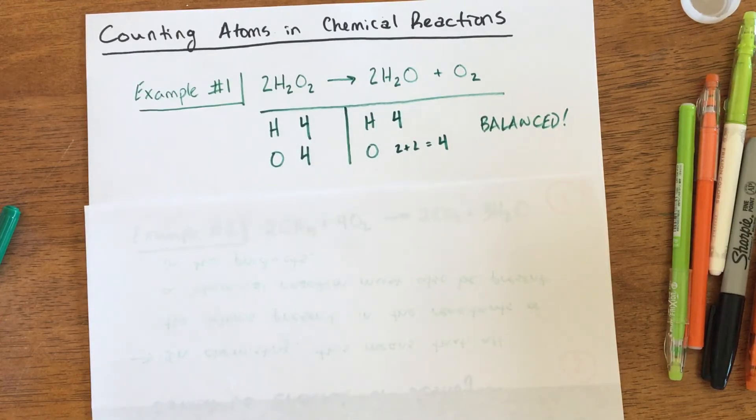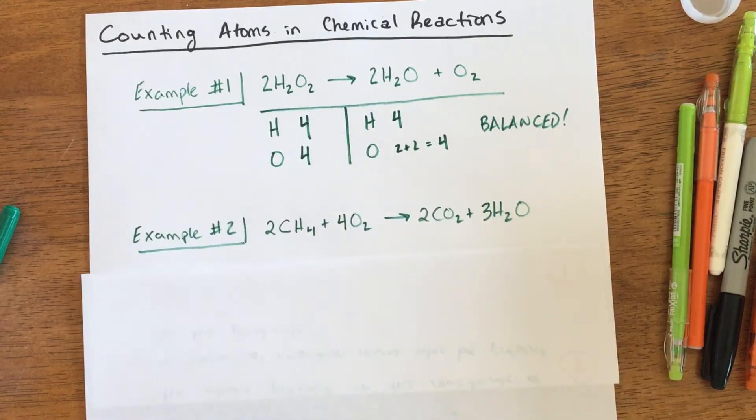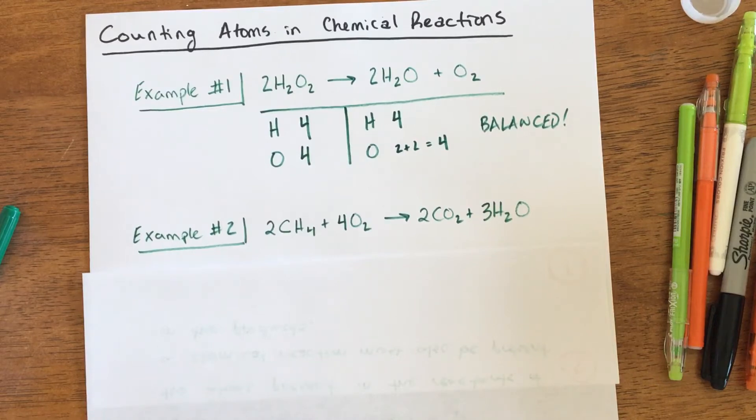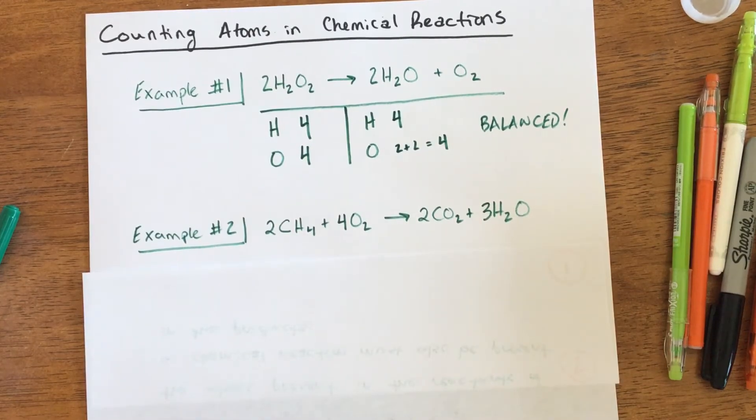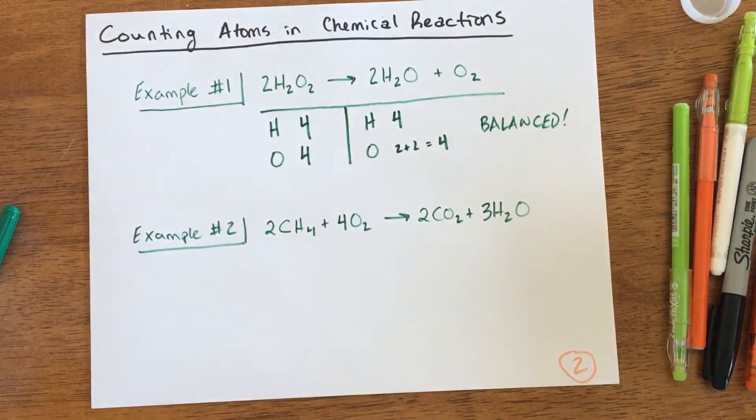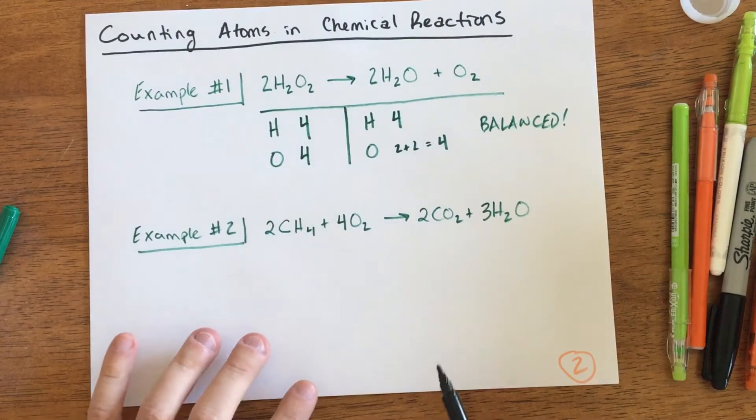Let's look at one more example. 2CH4 plus 4O2 goes to 2CO2 plus 3H2O. Already you should be a little bit concerned because you're seeing some odd and even numbers at the same time. Not necessarily a bad thing, but it's always something to be a little bit curious about. You'll notice they each have a coefficient this time. There are no coefficients of one. Let's go ahead and make our little T-chart.